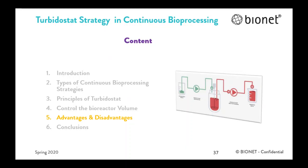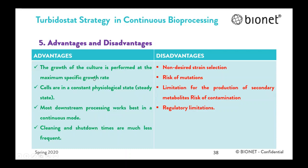To summarize the advantages and disadvantages of a continuous process and the turbidostat strategy: the advantages in general for continuous processes are that productivity and growth rate can be optimized by changing the feed flow rate during production, and for longer periods of productivity with less downtime — in theory a continuous process can be operated for a very long period. In the specific case of the turbidostat strategy, the growth of the culture is performed at the maximum specific growth rate of the microorganism because the nutrients are not limited in the media. Cells are in a constant physiological state reaching a steady state. Most downstream processing works best in continuous mode, and cleaning and shutdown times are much less frequent.